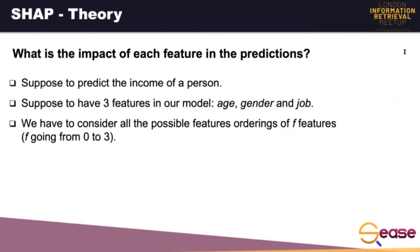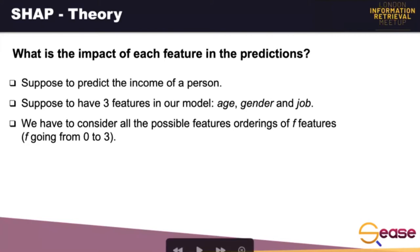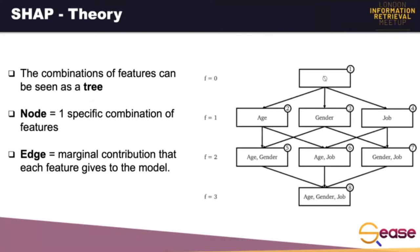Let's take an example to see how the importance of a feature is determined in the Shapley Additive Explanation. Suppose we use a linear regression to predict the income of a person, and suppose we have three features in our model: age, gender, and job. To understand the importance of a feature, we have to consider the outcome of all the possible combinations of features. In our scenario, we have to consider all possible combinations with F features, F going from 0 to 3, where 3 is the total number of features. This set of possible combinations can be represented as a tree, where each node contains a specific combination of features, and each edge represents the marginal contribution that each feature gives to the model.